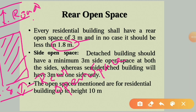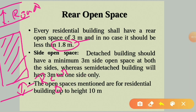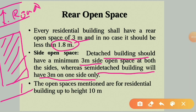For side open space: a detached building should have a minimum of 3 meters of side open space on both sides, whereas a semi-detached building will have 3 meters on one side. If 3 meters is provided, there will be good lighting and ventilation. All these open space specifications are for residential buildings up to a height of 10 meters only.